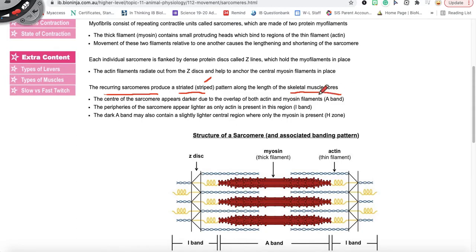So this is why if you look at skeletal muscle under the microscope it looks striped. It looks like this and it's because of the pattern here of the myosin and the actin.